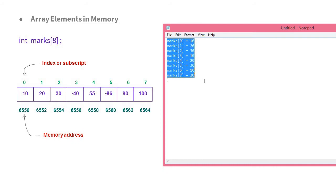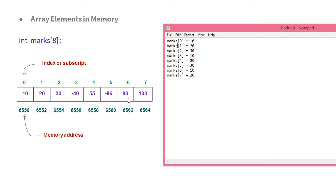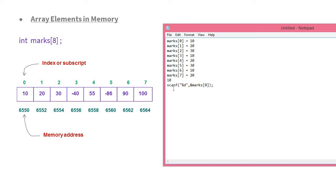To store a value into an array, I write a statement like: scanf("%d", &marks[0]). This means whatever value the user enters — say 10 — will be stored at marks[0]. The percentage d is used because it's an integer, and we pass the address of marks[0] to scanf.